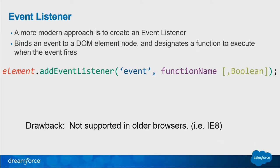The new way of doing this is called event listeners. This is a more modern approach that binds an event to DOM elements and designates a function to execute based on the event that occurs. You add an event listener specifying what event you're listening for — for example, add event listener click and then the function. The drawback is that it's not supported in older browsers. IE8 and before don't support event listeners, but IE9 and onwards they're wide open.